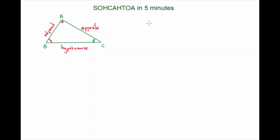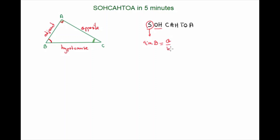SOHCAHTOA is a mnemonic trick that we use in order to remember what ratios stand for what. The first letter S stands for the ratio sine. The sine of B, for instance, will be the opposite over the hypotenuse — thus the 'OH'. So sine of B is the opposite over the hypotenuse.